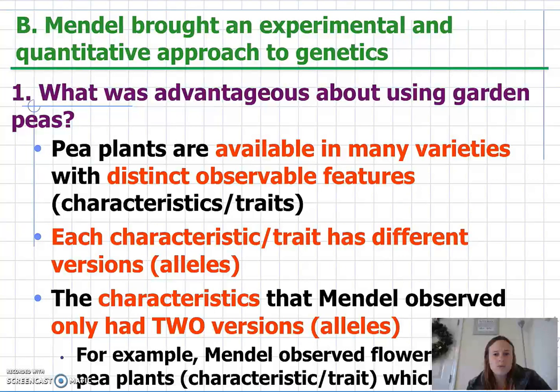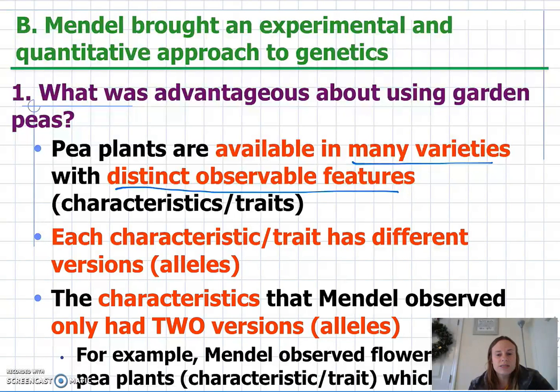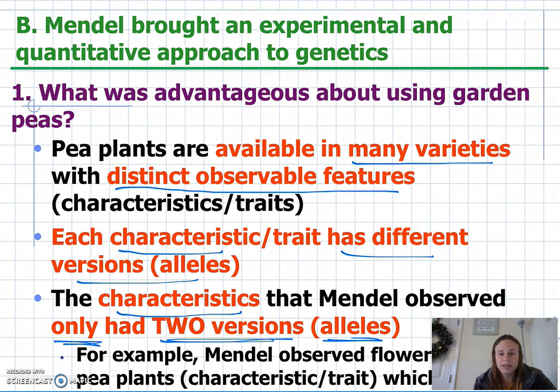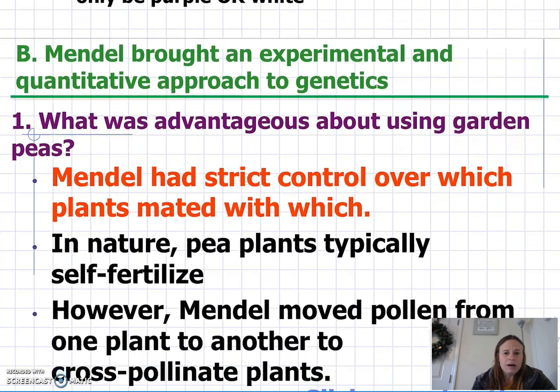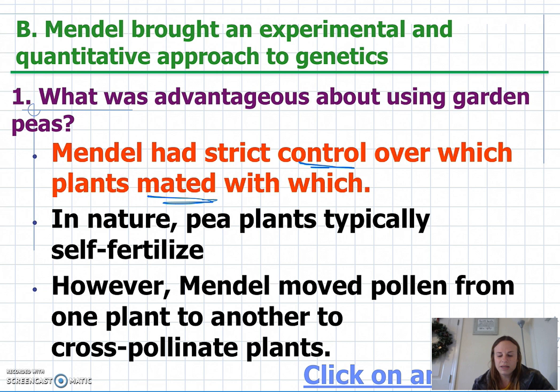What Mendel did was use plant peas. Why? First, peas are available in many varieties and have distinct observable features. Unbeknownst to him, each characteristic had a different allele and these characteristics only had two versions, or two alleles — so in that way he was fortunate. Furthermore, Mendel was able to control the mating of the plants by removing the stamen and the pistil, which are the sex organs, and then forcing whichever plants he chose to mate.